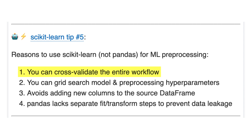Point number one: you can cross-validate the entire workflow. That means you can create a pipeline of preprocessing and model building, and you can use cross_val_score on that pipeline. Cross_val_score will take in the pipeline and do the splitting and preprocessing within each fold — it will not do the preprocessing first. That actually produces the most accurate estimates of future performance. If you do the preprocessing yourself before cross_val_score, that leads to data leakage. Instead, create a pipeline of preprocessing and model building and use cross_val_score on the pipeline.